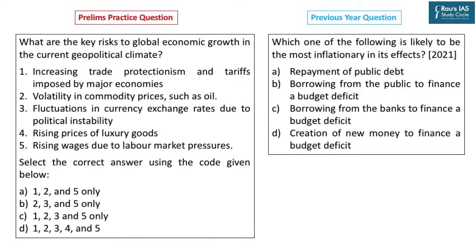In 2021, UPSC asked this question: which one of the following is likely to be the most inflationary in its effect? The answer is creation of money — printing of money by the government to finance a budget deficit. Let's take up a discussion for practice.